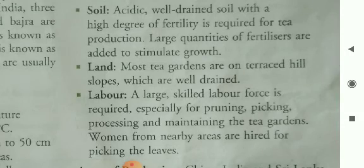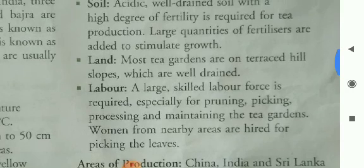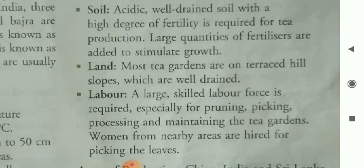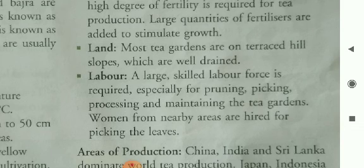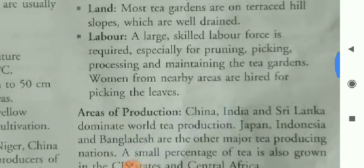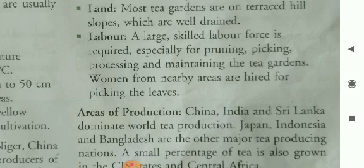Soil: acidic, well-drained soil with a high degree of fertility is required for tea production. Large quantities of fertilizers are added to stimulate growth. Most tea gardens are on terraced hill slopes which are well-drained and suitable for growing tea.